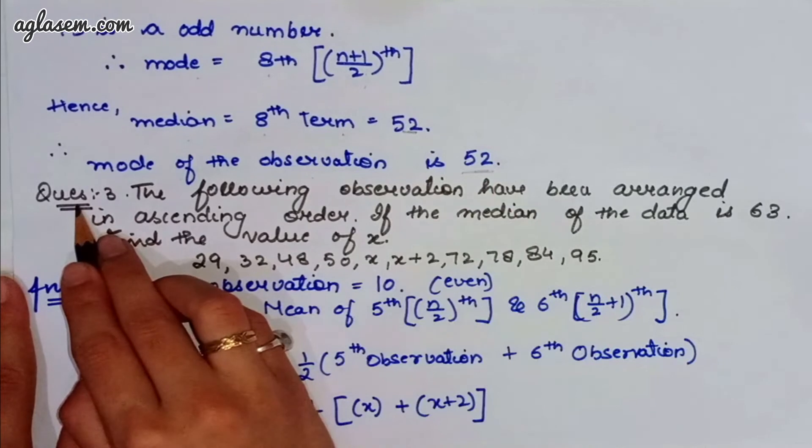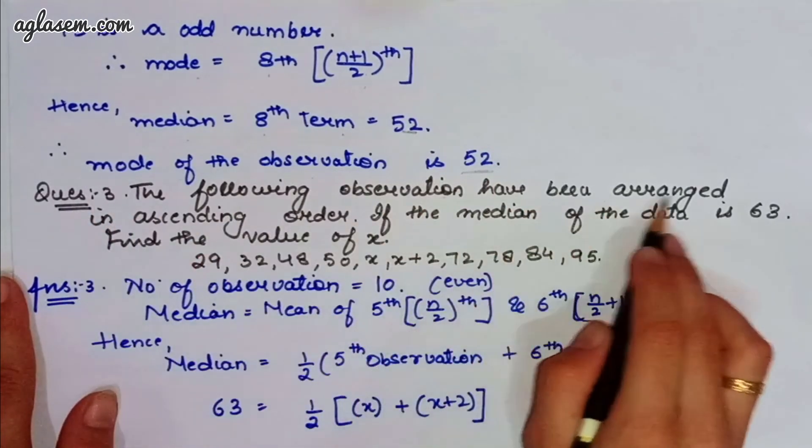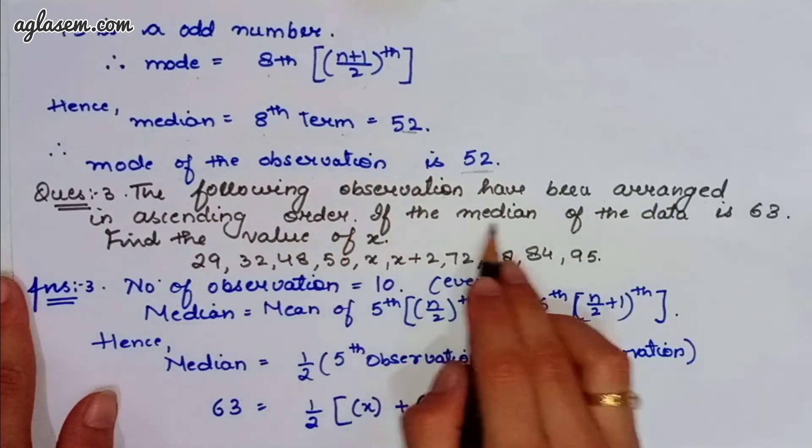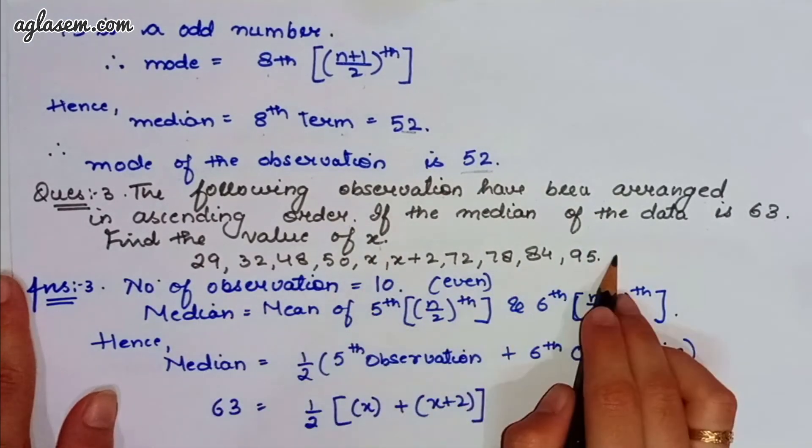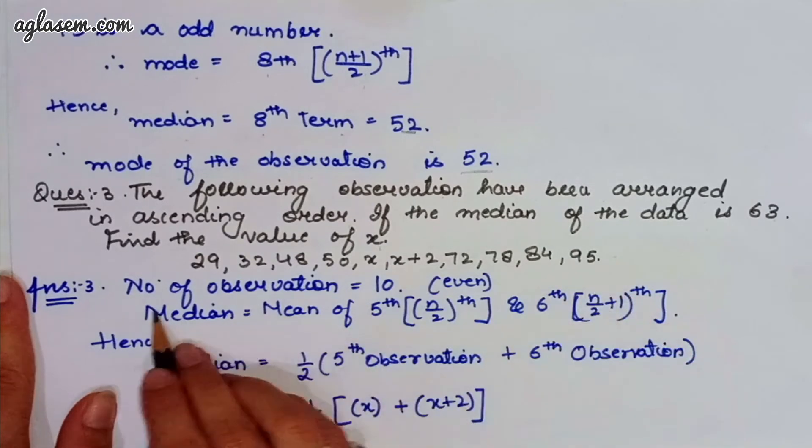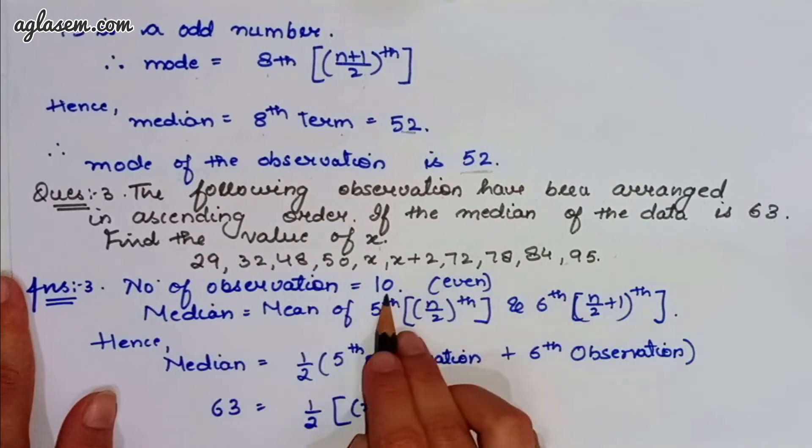Moving to our third question, which says, the following observations have been arranged in ascending order. If the median of the data is 63, find the value of x. So, all this is given in an ascending order. So, number of observations we have counted, that is 10, which is even.